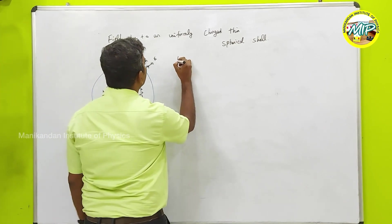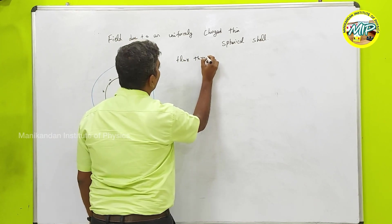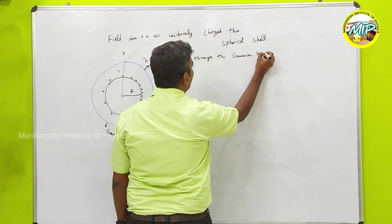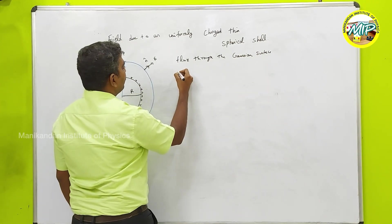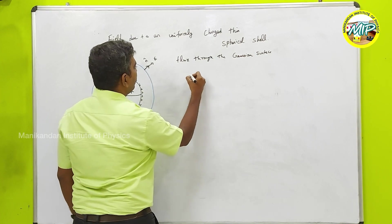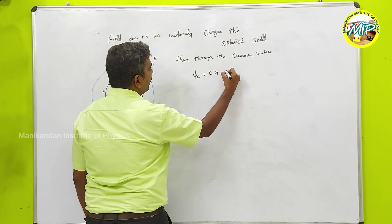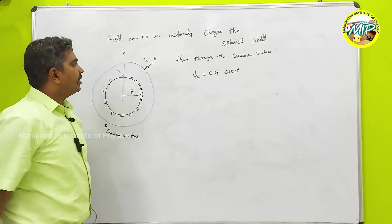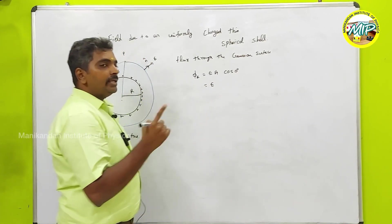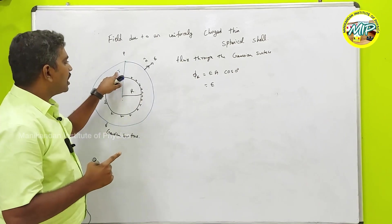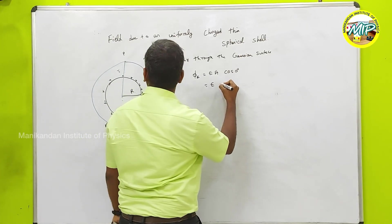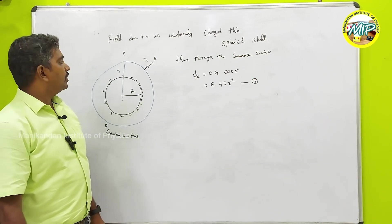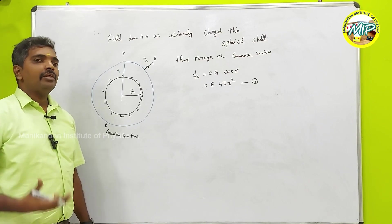The flux through the Gaussian surface is φ_E equals E into A cos(0°), because the normal is parallel to the electric field. So φ_E equals E into A, and the area of the Gaussian surface with radius R is 4πR². So my flux equals E into 4πR². This is equation 1.